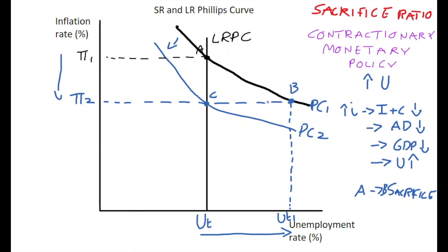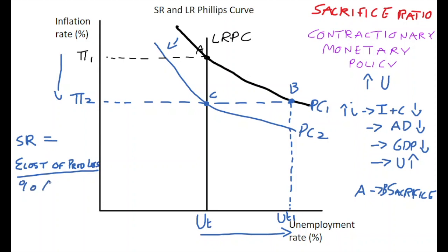When studies have been carried out to find out what the actual sacrifice ratio is, they've shown it can be worked out with a formula. The sacrifice ratio is the number of percentage points of annual output lost in the process of reducing inflation by one percentage point. It equals the euro cost of production lost divided by the percentage change in the inflation rate.